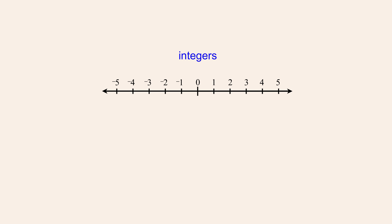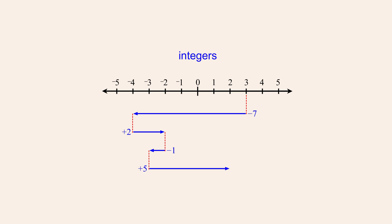For example, let's say we start with three, then subtract seven, then add two, then subtract one, and then add five. The result is positive two. However, to produce this result that everyone agreed represented an actual quantity, we traveled through the shady land of negative numbers to get there.